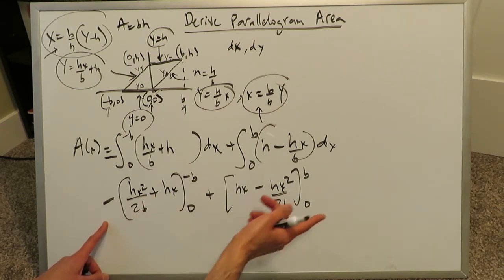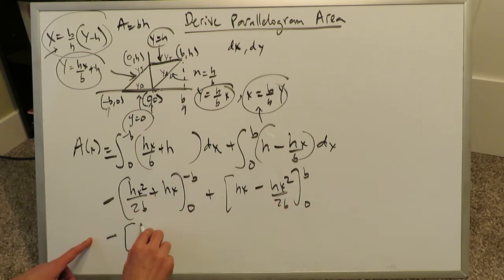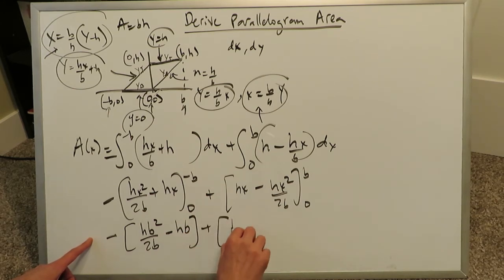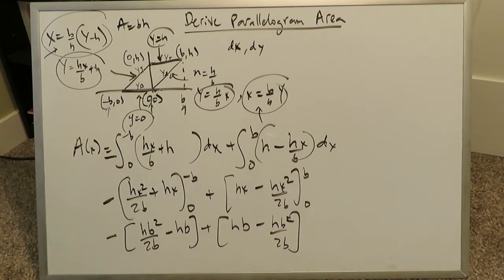Let's plug in the minus b and the b into places of x. We don't even bother plugging in zeros, because they have no effect. Here we'll get hb squared over 2b minus hb plus hb minus, here we're plugging in the b's, hb squared over 2b. All we have to do is simplify this. And let's simplify this. Let's open up this parenthesis. When I open up this parenthesis, this minus becomes a part of this hb squared over 2b. And then we can eliminate this parenthesis, we can eliminate this parenthesis right over here.